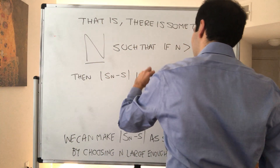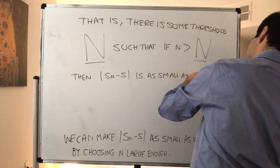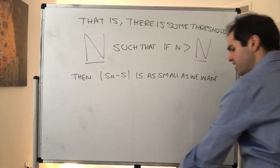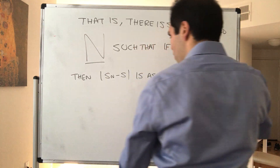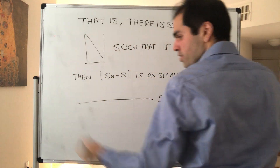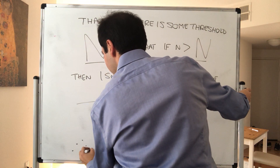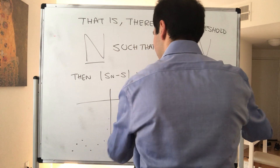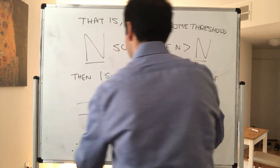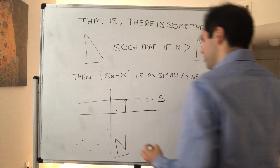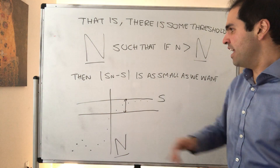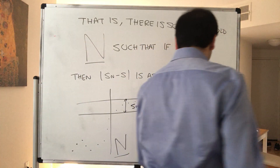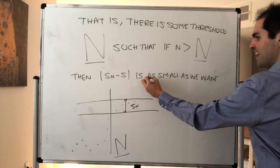Really, n goes to infinity, n is large. We don't care what happens for n equals 1 or n equals 2. The whole point is, it's okay for the distance to be large for a couple of values. All we're saying is there is some threshold N such that after you reach that threshold, all the values of your sequence are actually pretty close to your limit. Now, what does it mean to be as small as we want?